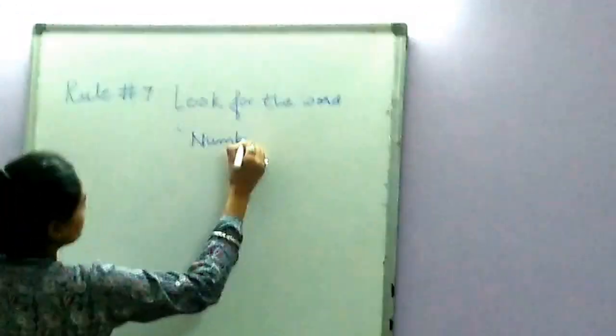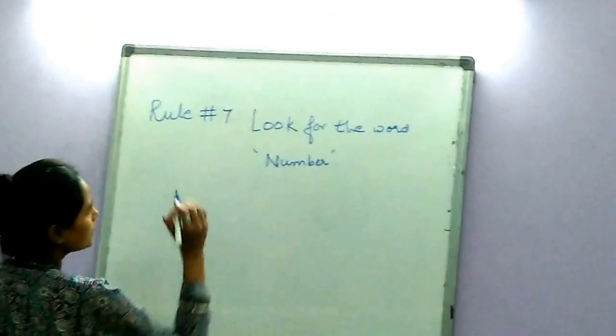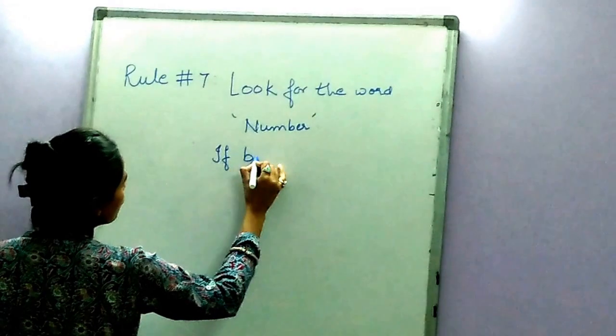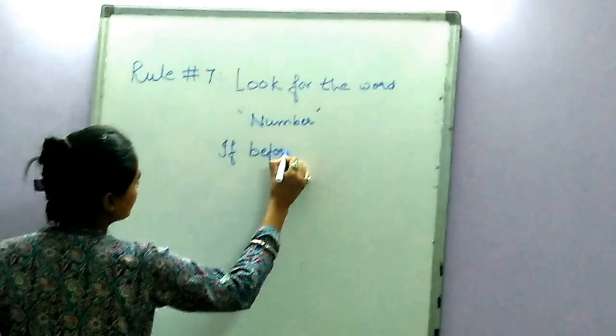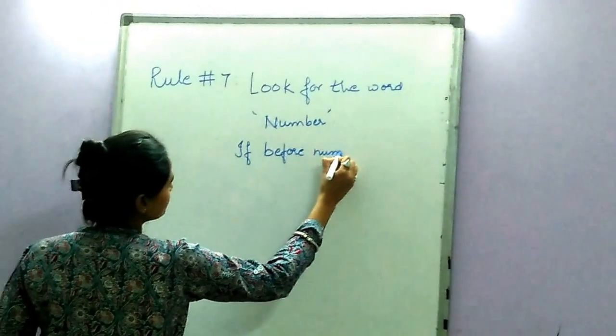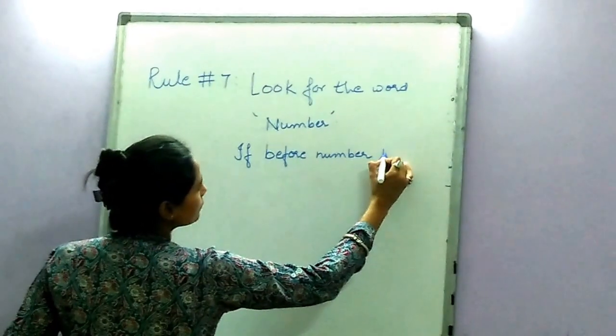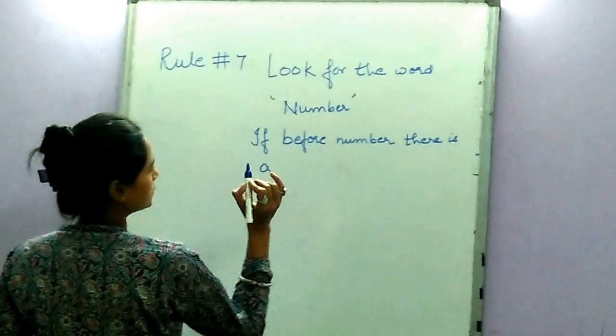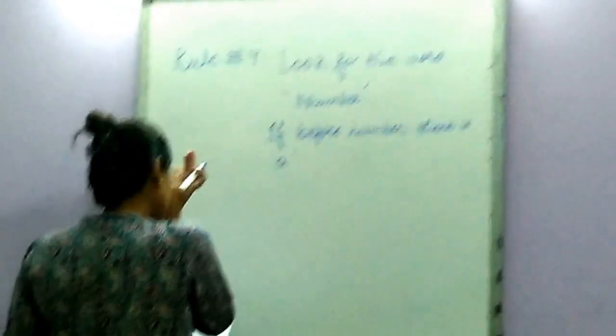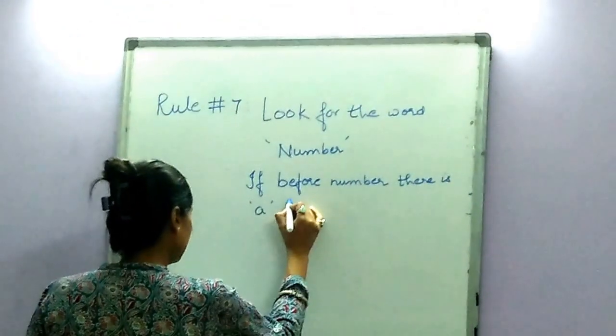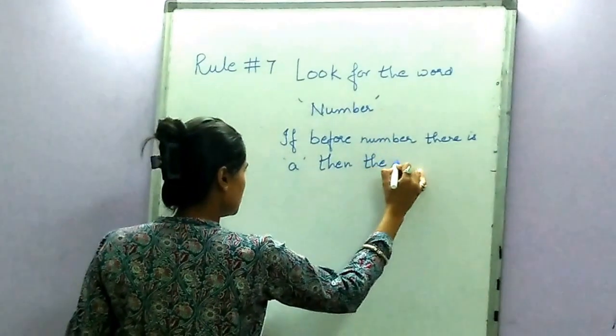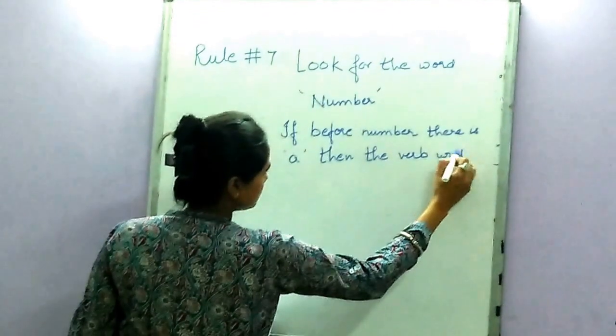Number. Number. And it is - if before number there is a, there is a, again that is a number, then the verb will be plural.